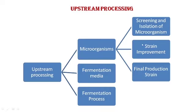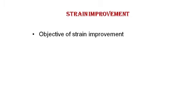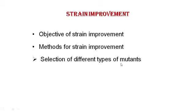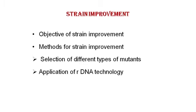The strain improvement processes will make the isolated microorganism more suitable for fermentation. After applying strain improvement strategies, we have the final production strain that can be used for the fermentation process. In strain improvement, we study the objectives, methods with respect to selection of different types of mutants, and application of recombinant DNA technology to create or devise mutants.